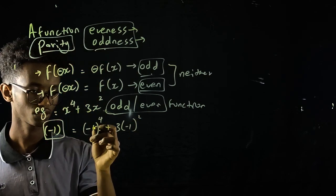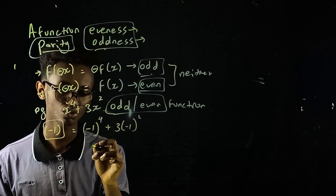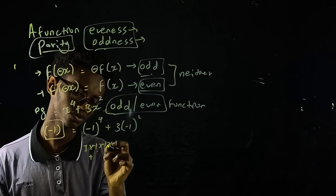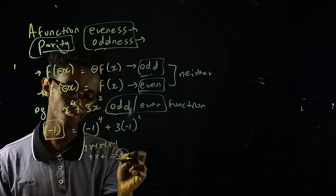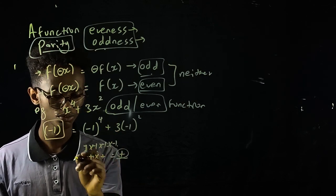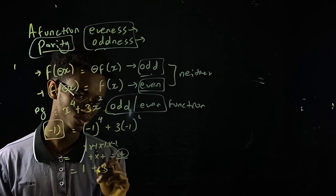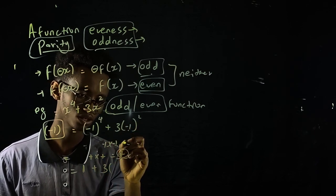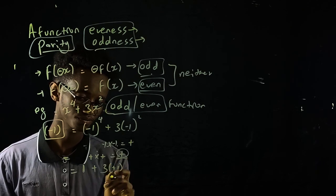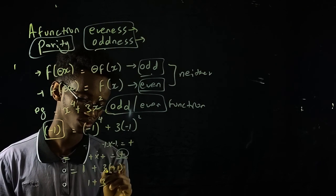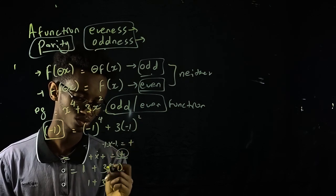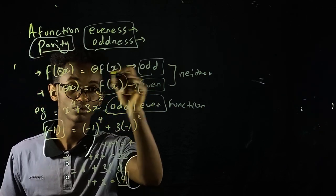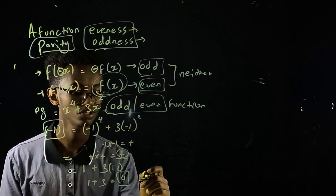(-1)⁴ is 1, and (-1)² is also 1, which is positive. So (-1)⁴ + 3(-1)² = 1 + 3(1) = positive 1. This is positive, same as f(x), so this is an even function.